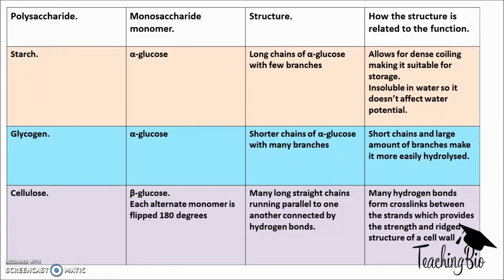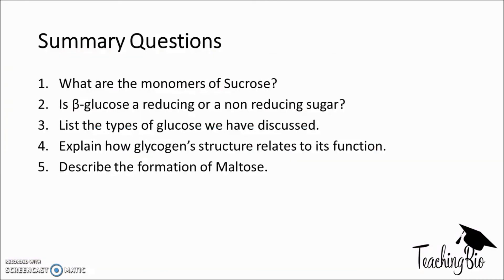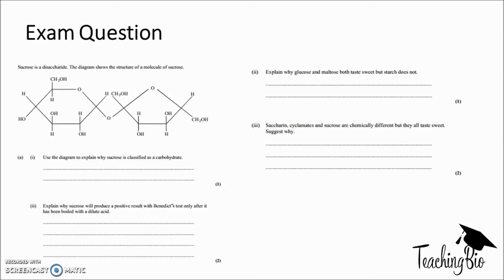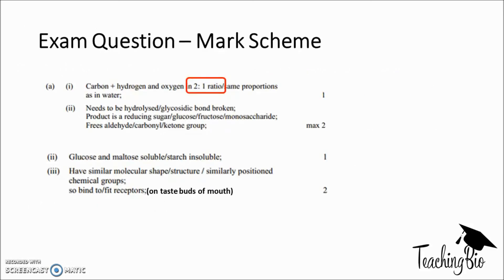Here's a little table for you to copy down - pause the video and make a copy. Then pause and have a go at the summary questions, the answers will follow. Interestingly, the mark scheme mentions a 2:1 ratio of carbon, hydrogen and oxygen, so it's probably worth learning that.